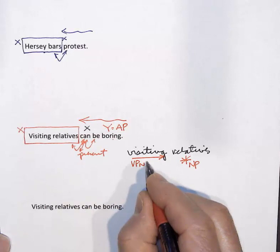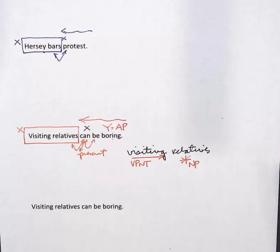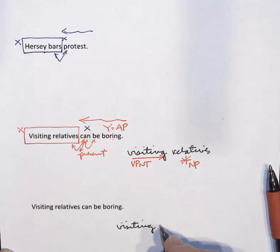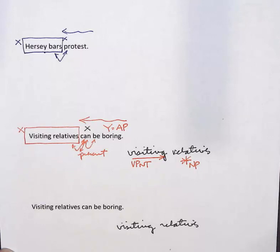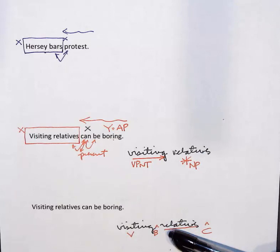The other way to analyze it: 'visiting relatives' is a verb phrase with no time, where 'visiting' is the verb, the particle place is empty, and 'relatives' is the object. This means the action of going to visit your relatives is what can be boring. In the first analysis, it's the people that are boring; here, it's the action — doing this activity — that is boring.